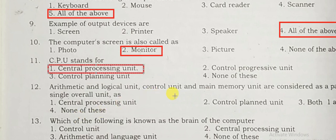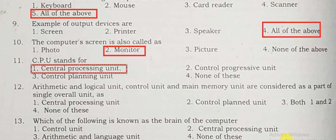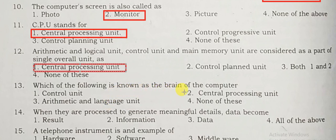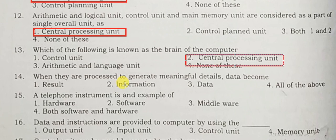Arithmetic and logic unit, control unit, and main memory unit are considered as part of a single overall unit. The brain of the computer is the central processing unit. When data is processed to generate meaningful details, data becomes information.